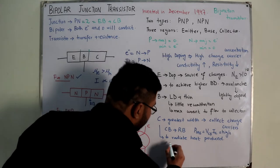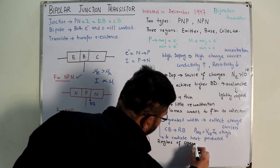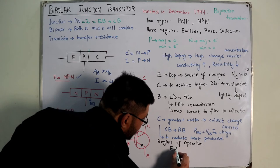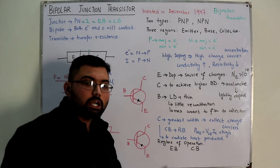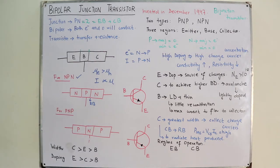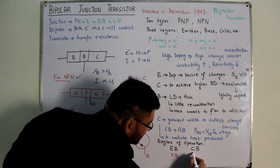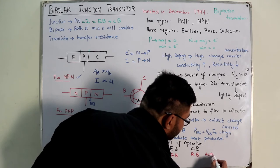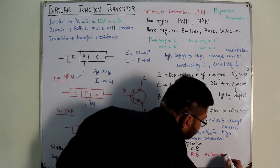Now let's discuss the regions of operation of the BJT. There are two junctions - emitter-base and collector-base - each of which can be forward or reverse biased, giving four possible combinations. The first and most important is the active mode: emitter-base junction is forward biased and collector-base junction is reverse biased. In active mode, the transistor acts as an amplifier.